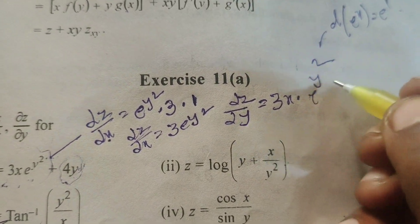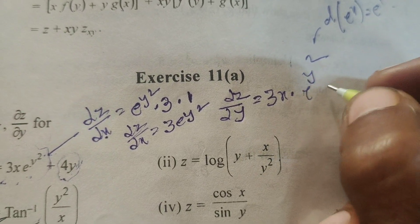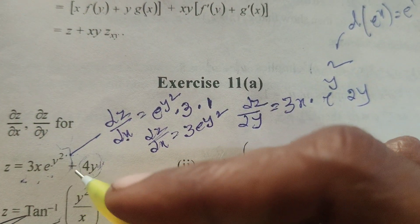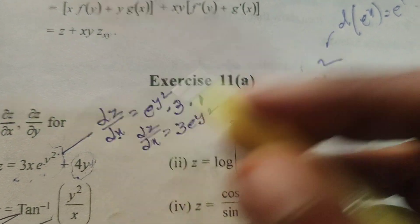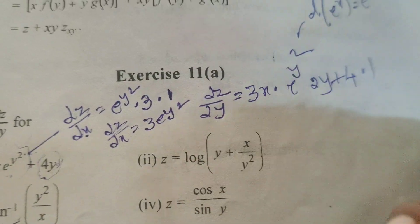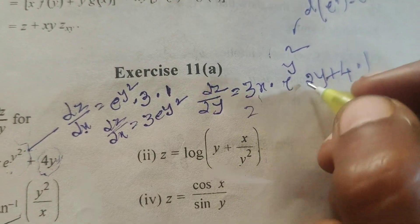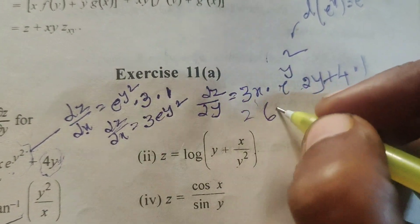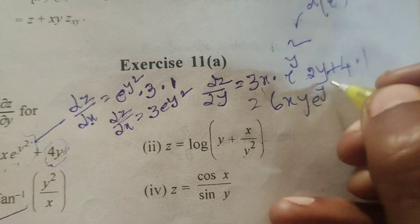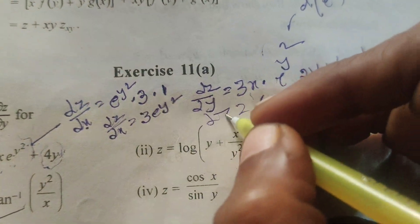Here, y square is there — differentiation of y square gives 2y. Next, plus in this term, y is there — plus 4 into differentiation of y means 1. Therefore, dou z by dou y means 3 times 2, which is 6, x, y, e power y square plus 4.